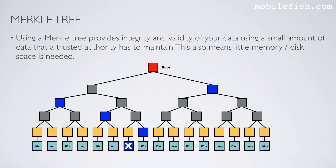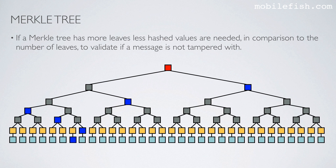Using a Merkle tree provides integrity and validity of your data using a small amount of data that a trusted authority has to maintain. This also means little memory or disk space is needed. If a Merkle tree has more leaves, fewer hashed values are needed — relative to the number of leaves — to validate that a message is not tampered with. For example, if we double the number of leaves and want to prove to Bob that this data is not tampered with, we only need to send this data and five hashes to Bob so he can calculate the root hash.